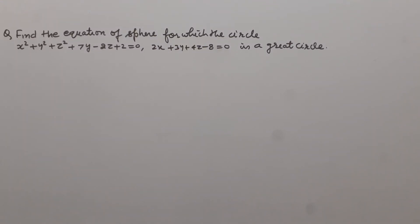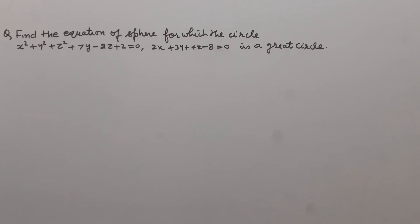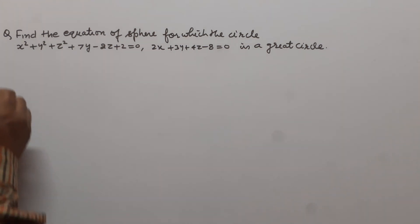Find the equation of the sphere for which the circle x² + y² + z² + 7y - 2z + 2 = 0, 2x + 3y + 4z - 8 = 0 is a great circle.